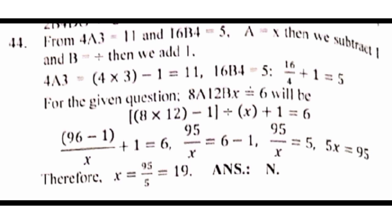4a3 means 4 times 3. So, in any multiplication, you subtract. So, subtract 1 from it, 12 minus 1, 11. 16b4, 16 divided by 4, add 1 to it, it becomes 5.